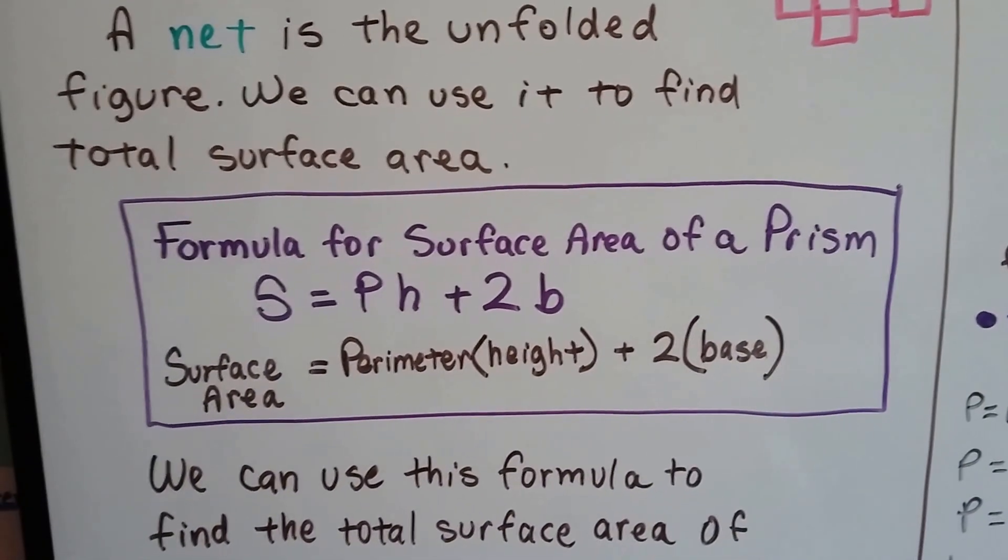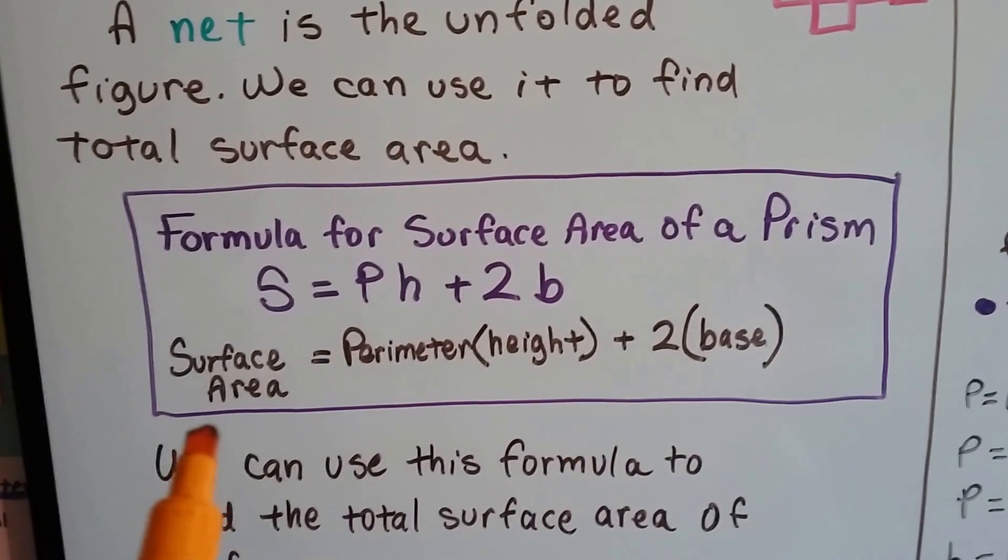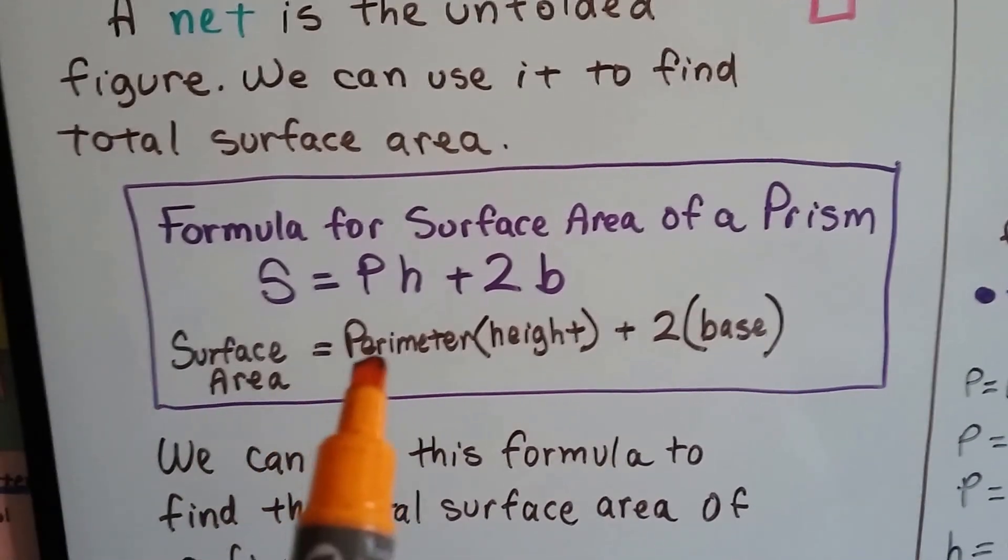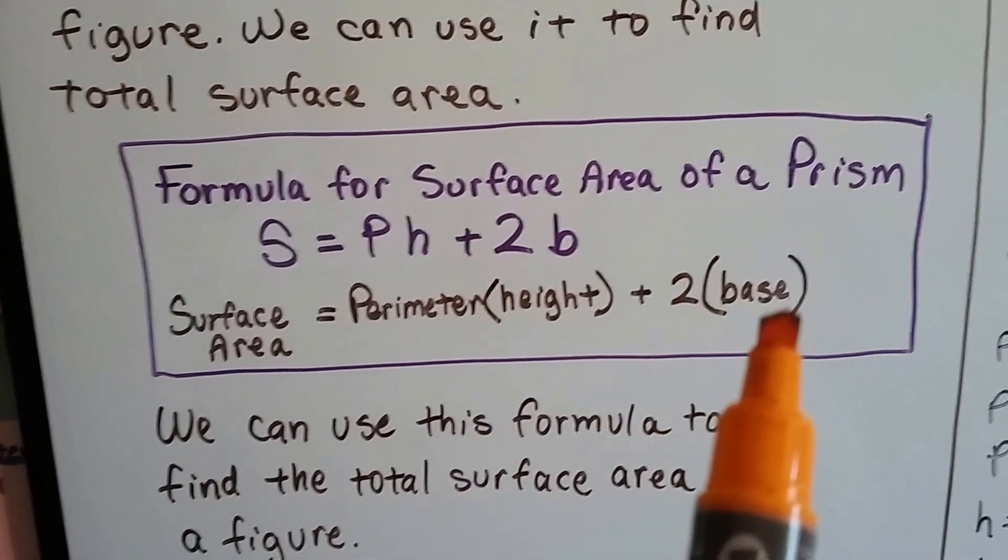The formula for the surface area of a prism is S equals pH plus 2b, and that means surface area equals perimeter times height plus 2 times the base.